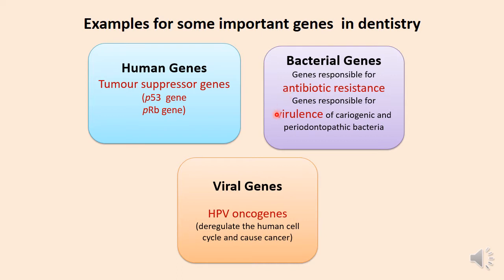The bacterial virulent genes are also important since cariogenic bacteria with virulent genes will develop very severe dental caries, and periodontopathic bacteria with virulent genes cause severe periodontal disease. Among viral genes, HPV viral oncogenes will be important for you because they can deregulate the human cell cycle and cause cancer.